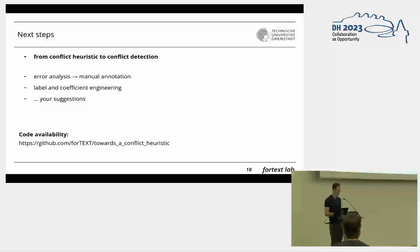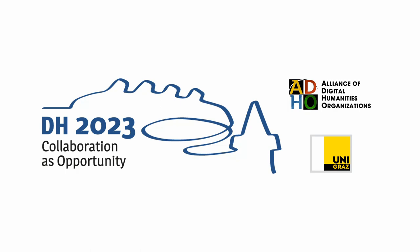That's all the results I want to show you now. The high-level goal is to get from a conflict heuristic to a proper method of conflict detection, to consolidate how far this simple operation of switching out label words from a sentiment analysis tool works. We're currently doing this by manually annotating text units and doing error analysis. We could also look further into label and coefficient engineering—different sets of label words. We'd be very happy to take your questions and suggestions. One last note: the Jupyter notebooks I used can already be found on GitHub. Thank you very much.